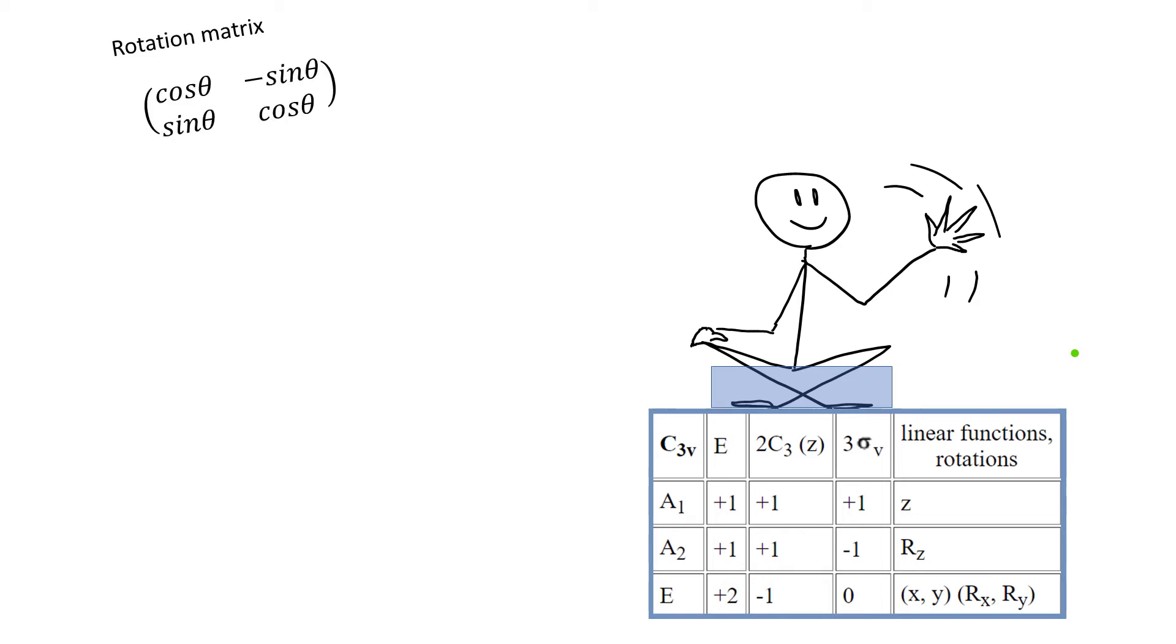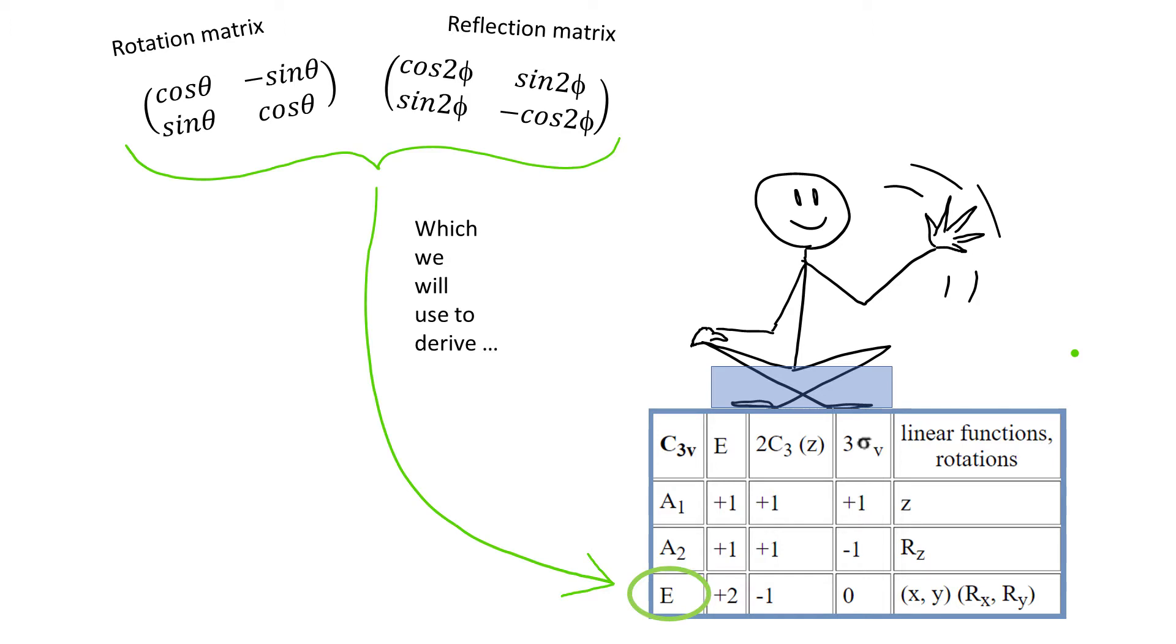Hello everyone! In this video we will derive rotational reflection matrices for two dimensions which we will use to construct E irreducible representation for C3V. At the end of the video I will introduce you to square diagonal matrix and we will deepen our understanding of irreducible representations.